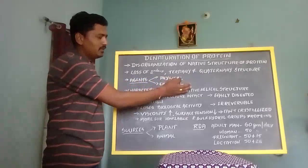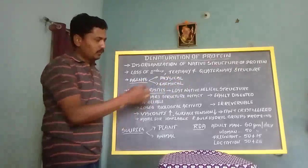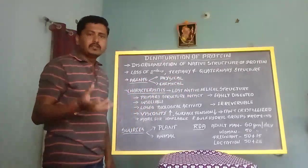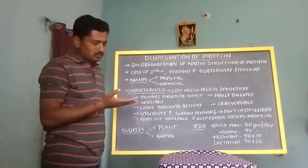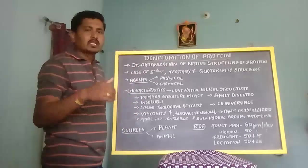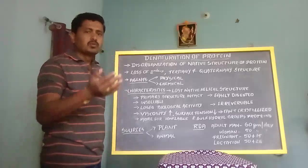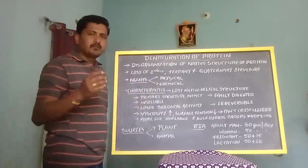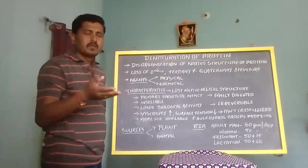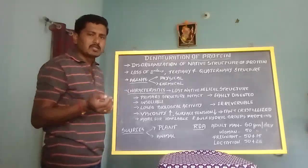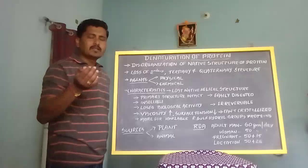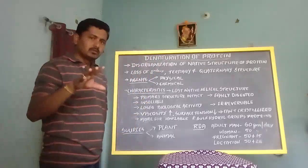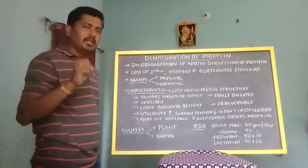The agents that help in the denaturation process are broadly classified as physical agents and chemical agents. Physical agents include vigorous shaking, heat, exposure to X-ray, and exposure to UV radiation. Chemical agents include strong acids, strong bases, and strong salts of heavy metals and salicylate, which act as chemical agents that bring about the denaturation process.